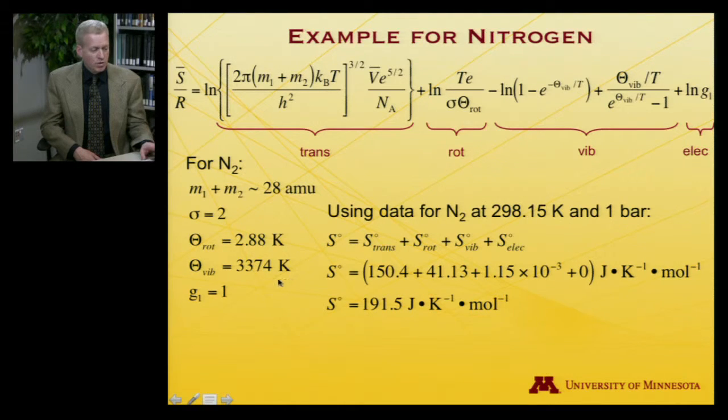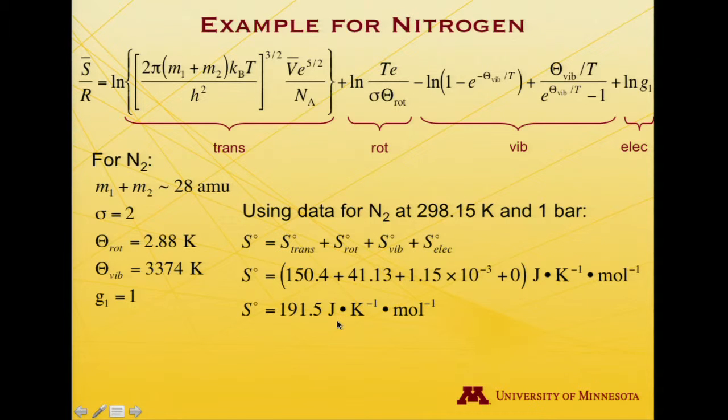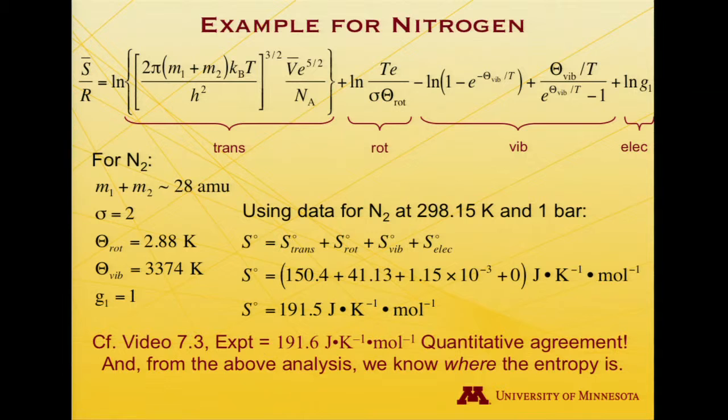But add them all together, and you get that the standard entropy is 191.5 joules per Kelvin per mole. And I should put a bar over this. This really is the molar entropy. And I'll just remind you that if you go back to video 7.3, where I showed an example of using or at least tabulated experimental data that would have come from heat capacity measurements, the value that was determined there was 191.6 joules per Kelvin per mole. So within 0.1 joule per Kelvin per mole, that is quantitative agreement.